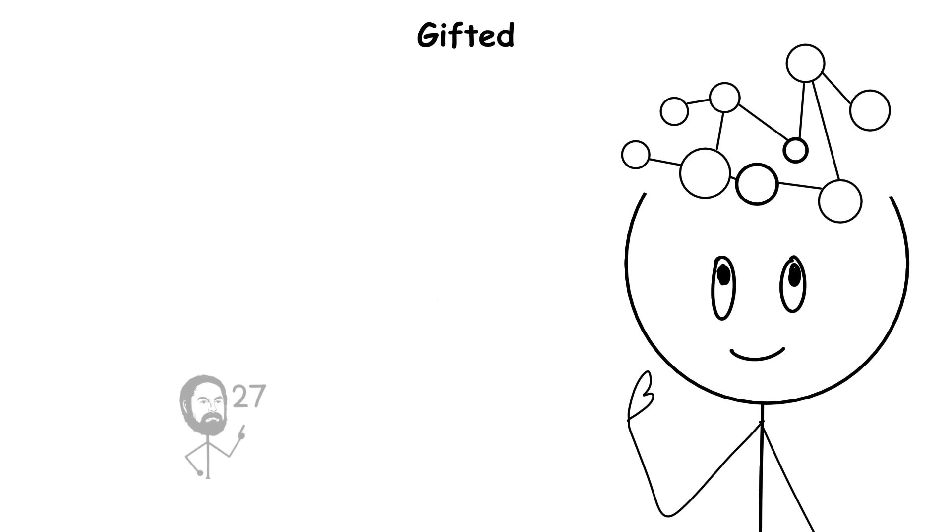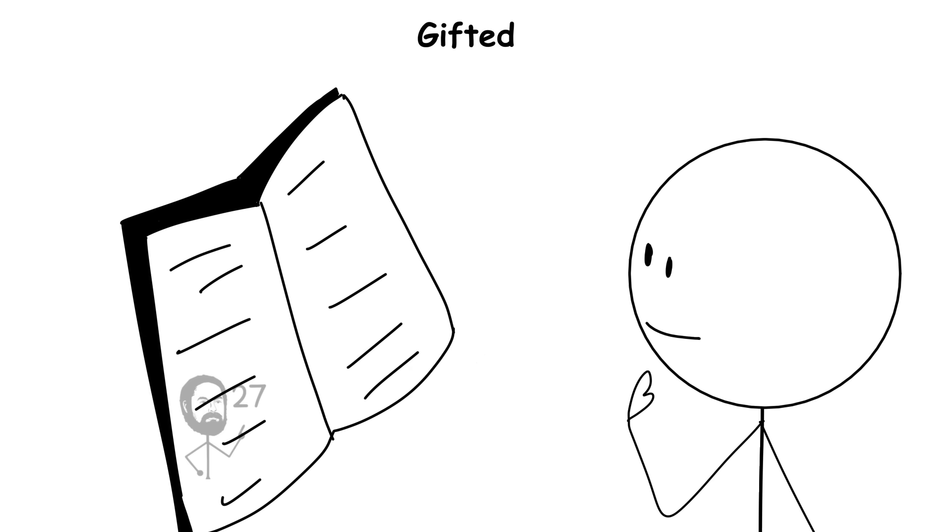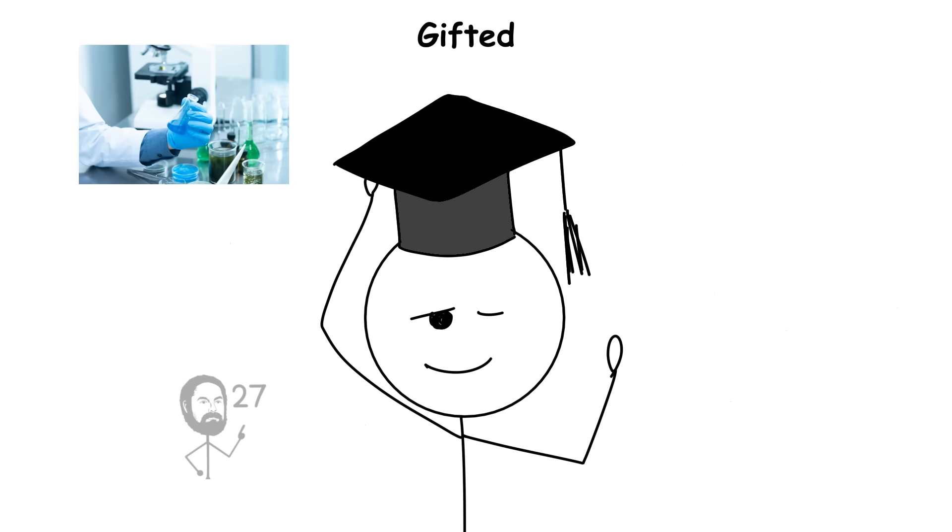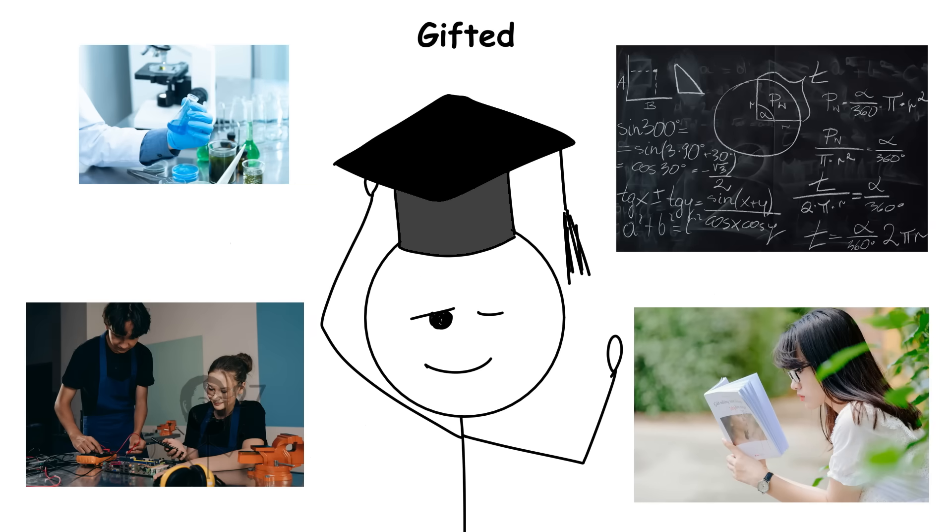Their cognitive processes operate with greater efficiency and depth. They don't just learn facts quickly, they perceive the underlying principles connecting them. This allows for rapid mastery of advanced concepts in fields like mathematics, philosophy, engineering, or art.